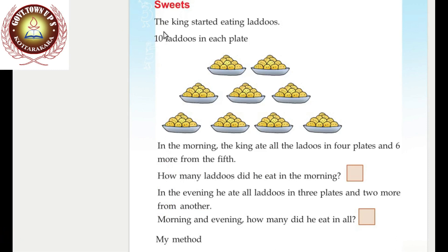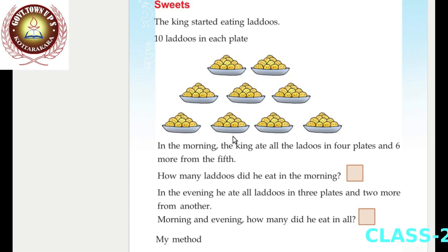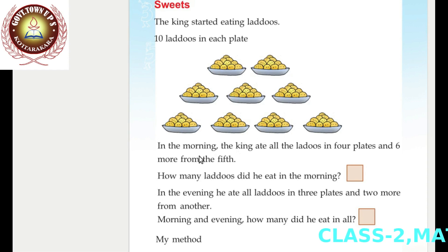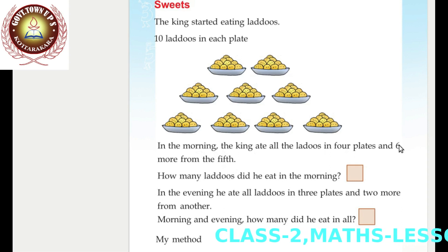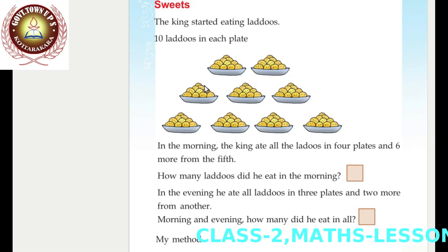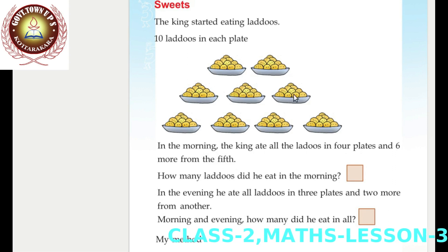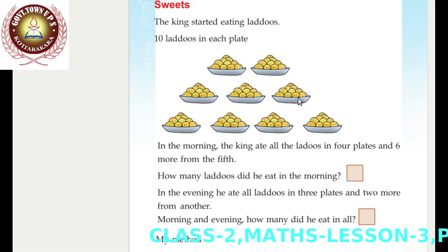Sweets. The king started eating lettuce. Ten lettuce in each plate. You can see nine plates of lettuce. In each plate, there is ten lettuce. In the morning, the king ate all the lettuce in four plates and six more from the fifth plate.